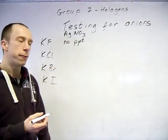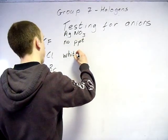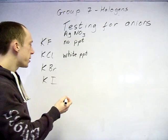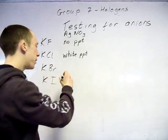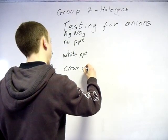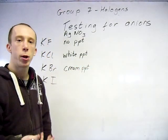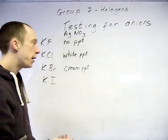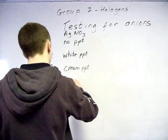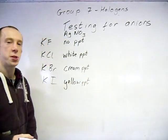Now, silver chloride, when that forms, you get a white precipitate, silver bromide, a cream precipitate. Notice here, PPT, perfectly acceptable for precipitate. And silver iodide, you get a yellow precipitate.